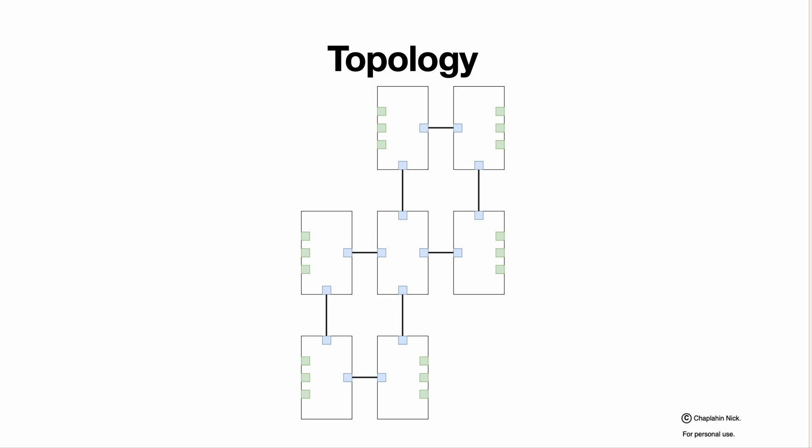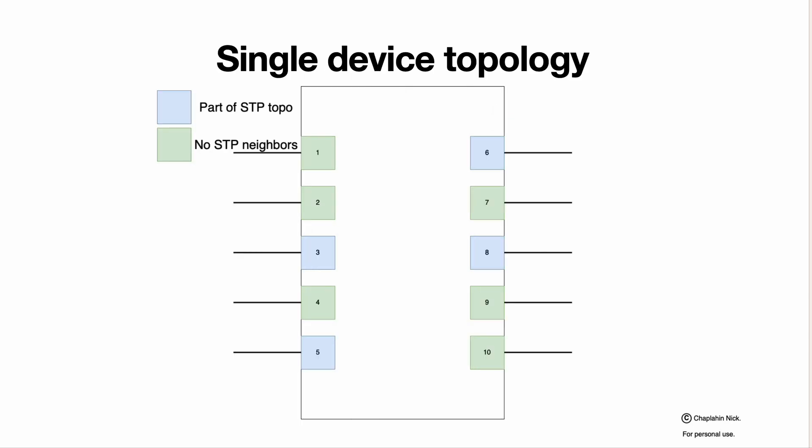The goal of STP is to bring the topology into a state where there are no cycles. This eliminates the risk of creating broadcast storms between devices. It sounds complicated but in reality it is much simpler, because each device operates individually.